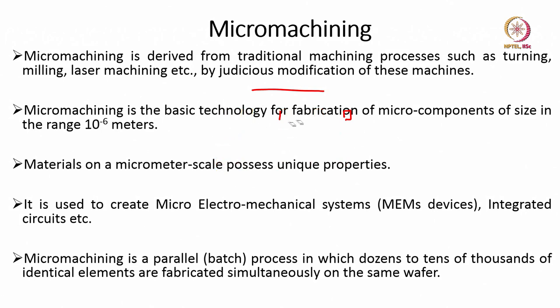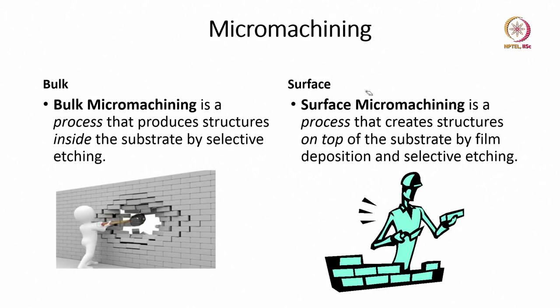Now let us understand the difference between surface and bulk micromachining. In surface micromachining, we build something on the substrate without machining the substrate — for example, the cantilever was fabricated on the substrate without changing its thickness. Bulk micromachining is different: in this case, we create different structures by etching the silicon wafer itself.